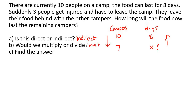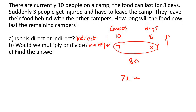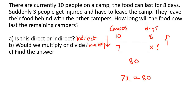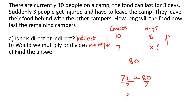With indirect, we multiply. So you're going to multiply these two numbers together, which is 80. And then if you multiply seven by X, that must also give you 80 — because with indirect, when you multiply it should always stay the same. So to get X by itself, you divide both sides by seven, and X would be 11.43 days. So now that there's only seven campers left, the food will last for 11.43 days.